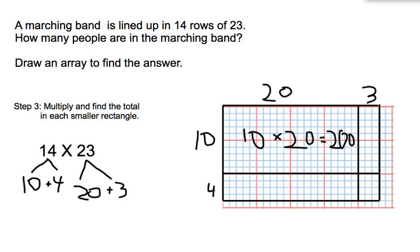Then we're going to multiply our 4 rows, each of 20, which will equal 80 band members in this rectangle.